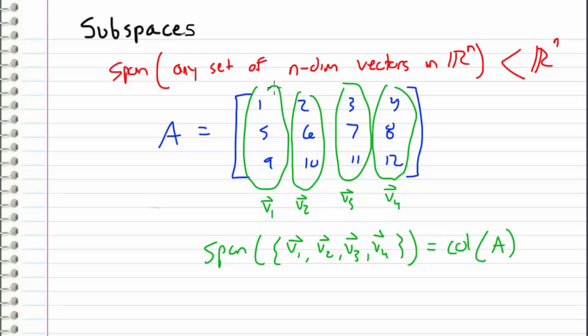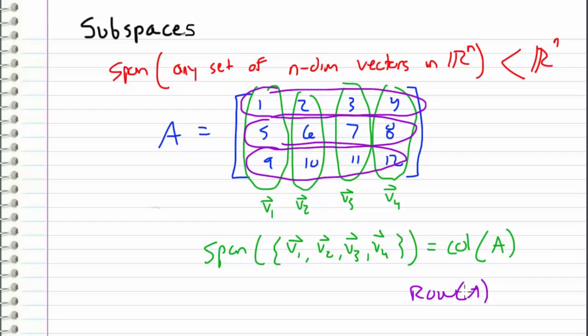And similarly, we can take the span of the rows. And if we were to take the span of these rows, what we get is the row space of A. So the span of the vectors that form matrices create subspaces that we are interested in. And we will be studying those later on in the series. So that's the reason why I wanted to point out that the span of any given vector set in Rⁿ is a subset of Rⁿ.